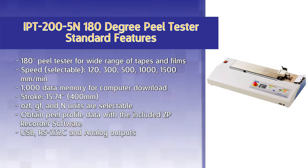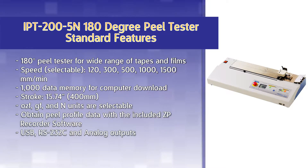The IPT200-5N is a 180 degree peel tester specifically designed for a wide range of tapes and films. The tester features several selectable speed settings: 120, 300, 500, 1000, and 1500 mm per minute.